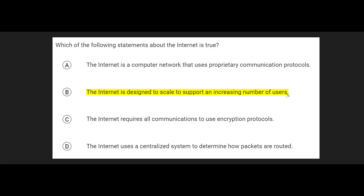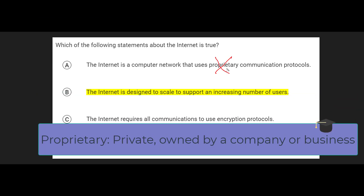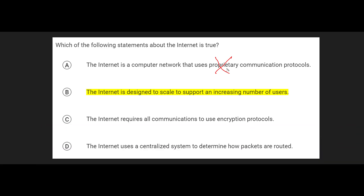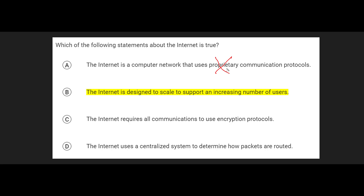Let's look at some of the other answers and see why they're wrong. It's not true that the Internet uses proprietary communication protocols — the keyword here being proprietary. The protocols used by the Internet are open protocols, meaning they're known and available for everyone to use. Option C is not correct because although it is recommended that you use encryption protocols whenever possible, they're not required — you can use the Internet without encryption. The keyword 'requires' makes this false.